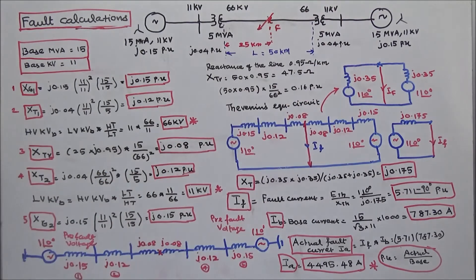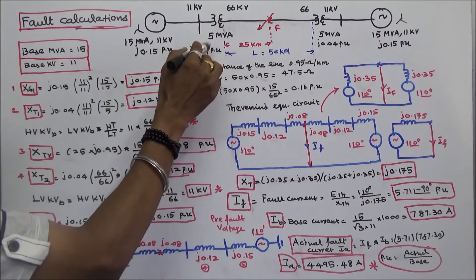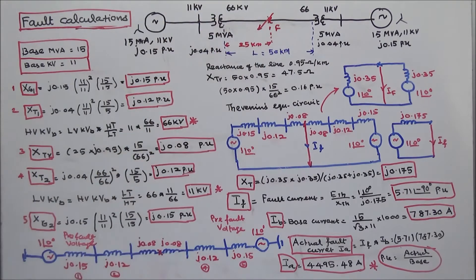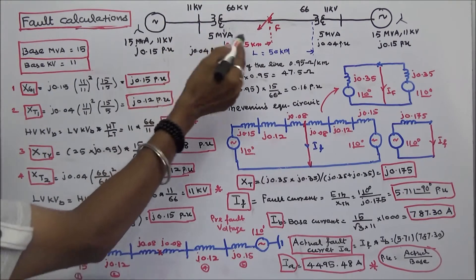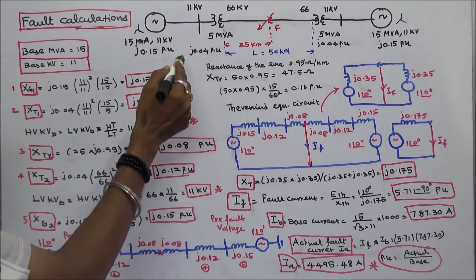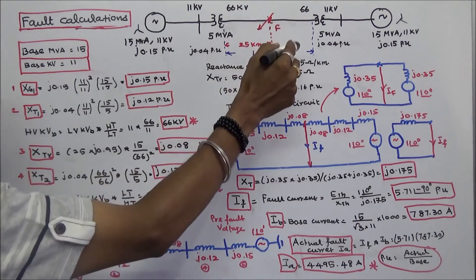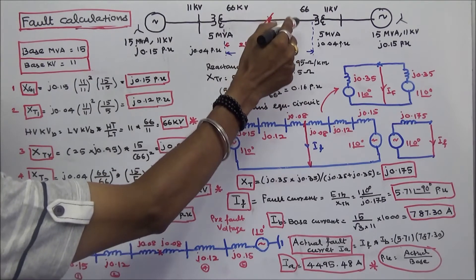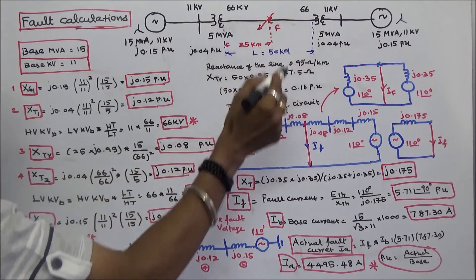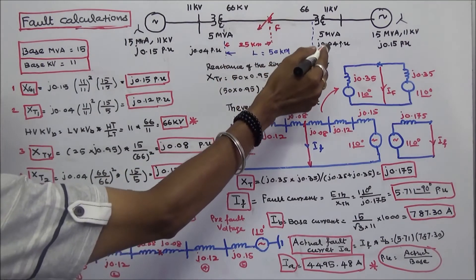Both generators are star connected. There are two transformers. Transformer 1 is a step-up transformer, 11 KV to 66 KV, rated 15 MVA, with reactance J.04 per unit. Transformer 2 is a step-down transformer, 66 KV to 11 KV, also rated 15 MVA with reactance J.04 per unit.